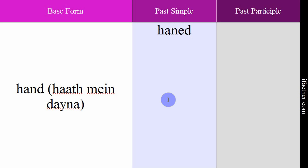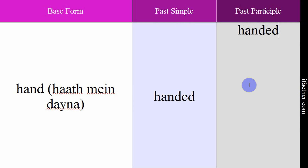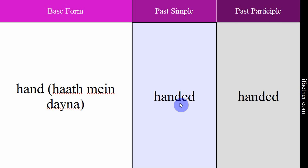The past simple form is 'handed' and the past participle form is also 'handed'. Past simple example: 'He handed his car keys to me.' — Usne mujhe apni gaari ki chabiyaan diin. Past participle example: 'I have already handed over my laptop to the teacher.' — Mein pehle hi apna laptop teacher ko dee chuka hoon. So 'hand' means deyna — to give or hand over. Past simple: handed. Past participle: handed.